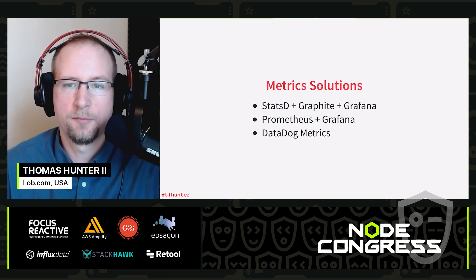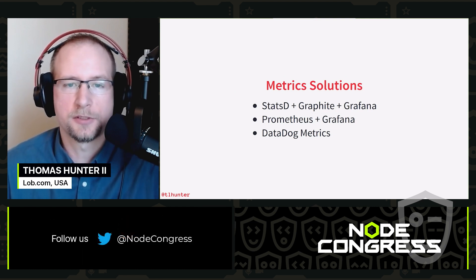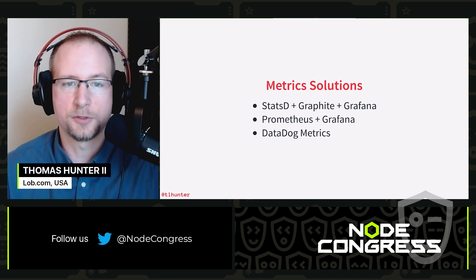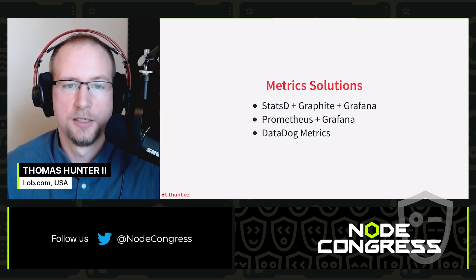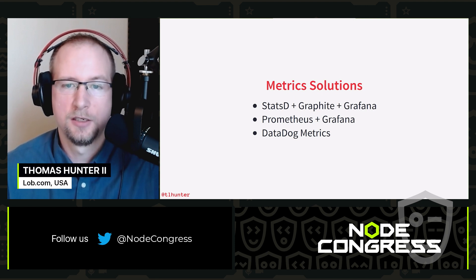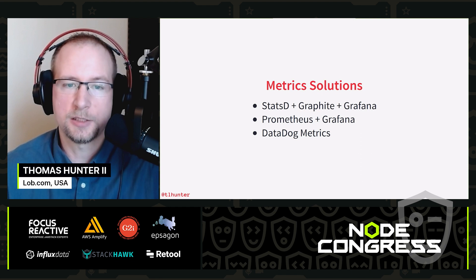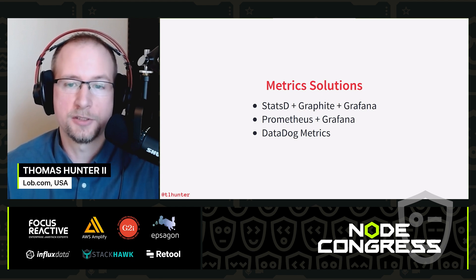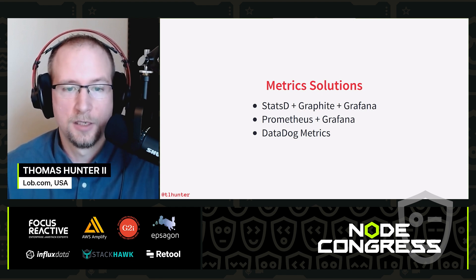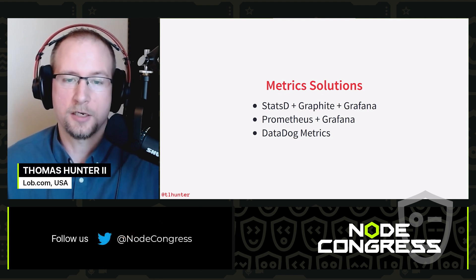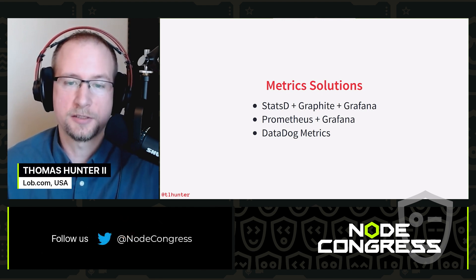There are a few different metric solutions. One common stack is statsd — a daemon for collecting metrics — Graphite, which is a database for storage, and Grafana, which is a dashboard. Another popular combination is Prometheus and Grafana. The Datadog company also has a metrics product as well.